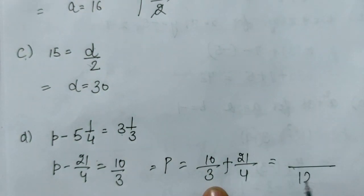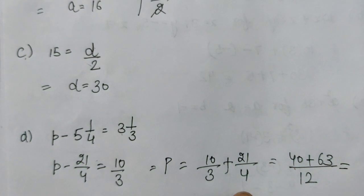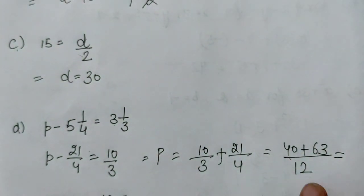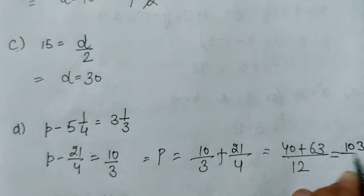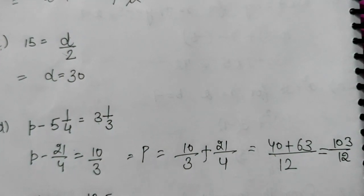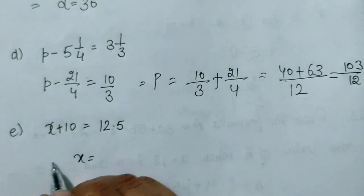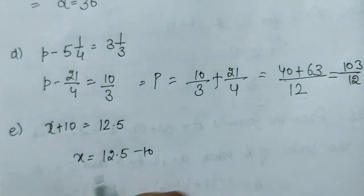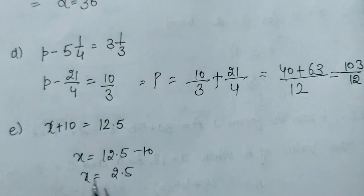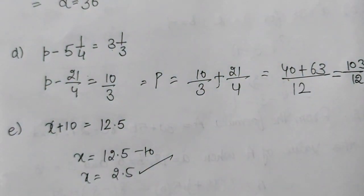P की value निकालने के लिए 10 by 3 plus — क्योंकि minus equal के इधर जाकर plus हो जाएगा। यहाँ पर LCM लेंगे, LCM 12 आएगा, तो 40 plus 63 = 103 by 12। अगर LCM में दिक्कत हो तो मेरी LCM और HCF वाली video देख सकते हो। P की value 103 by 12 आई। Next: X की value आएगी 2.5। X = 2.5 रखने पर 12.5 आता है, answer सही है।